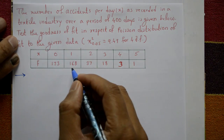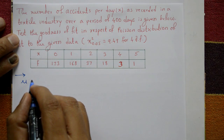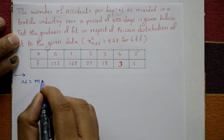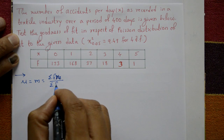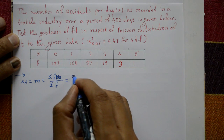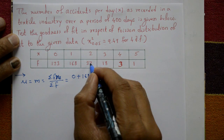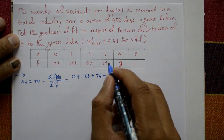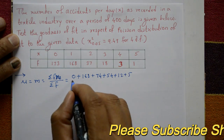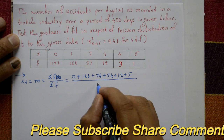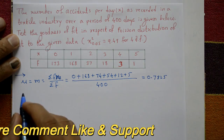Solution: First, find the expected frequencies. To do so, we find the mean. In Poisson distribution, mu equals summation of f·x divided by summation of f. Computing: 0 plus 168 plus 37 times 2 equals 74, plus 18 times 3 equals 54, plus 12, plus 5, divided by the total frequency of 400.